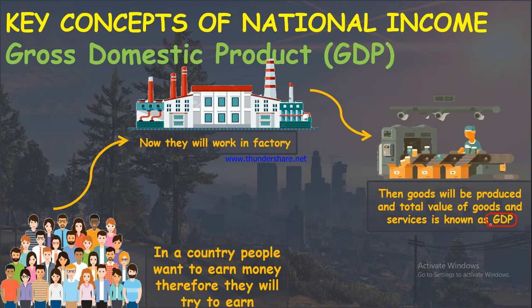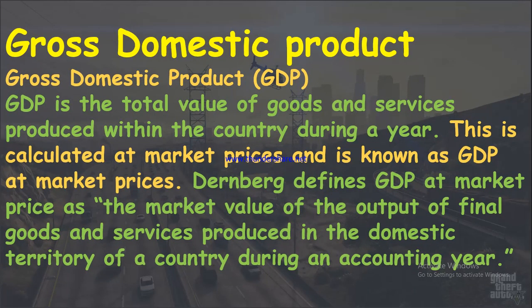The definition from the ICSI module: Gross Domestic Product is the total value of goods and services produced within a country during a year, calculated at market price — known as GDP at market price. If not calculated at market price, it is simply referred to as GDP. The market value of the output of final goods and services produced in the domestic territory of a country is GDP at market price — remember the name and definition for MCQs.